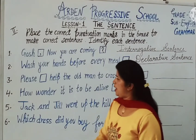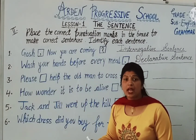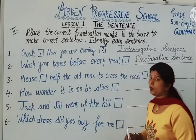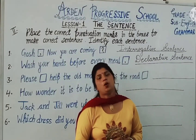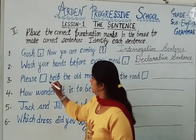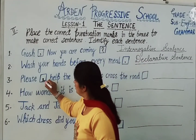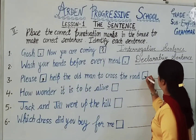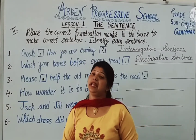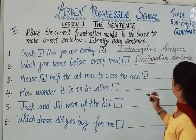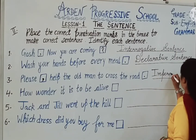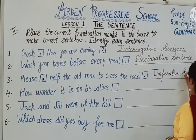Third one: Please help the old man to cross the road. In this, we are requesting. After 'please', a comma will come, then 'help the old man to cross the road', followed by a full stop. Since we are requesting, this is an imperative sentence.